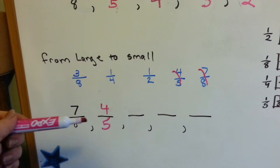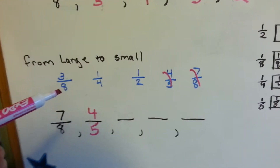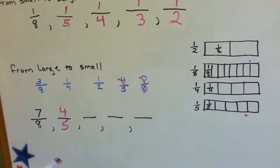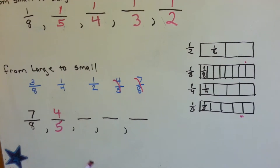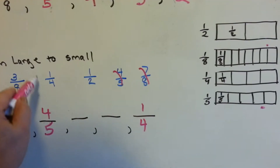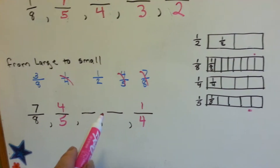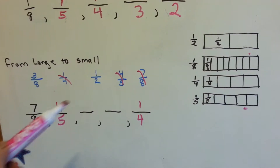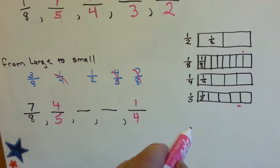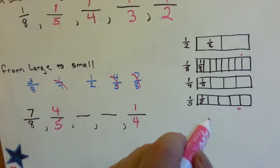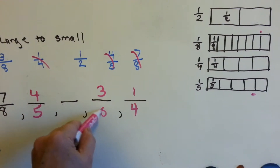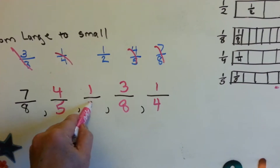Which one of these would be the next smallest from four-fifths: three-eighths, one-fourth, or one-half? One-fourth is the smallest, so let's put it at the end to get it out of the way. Now we have to figure out which ones go in the remaining spots. We're going from large to small. Three-eighths is this much, and half is this much — three-eighths is smaller, so that goes here. The only one left is a half, so that goes here — process of elimination.